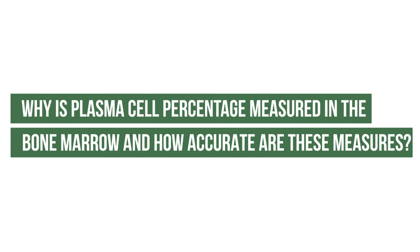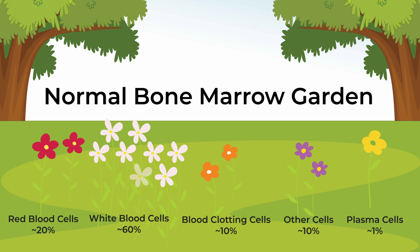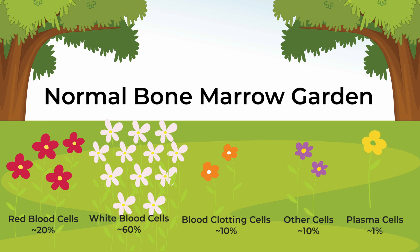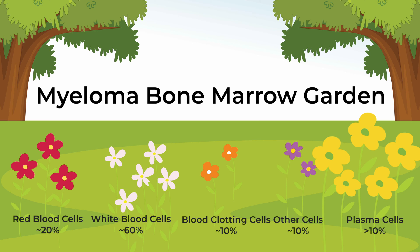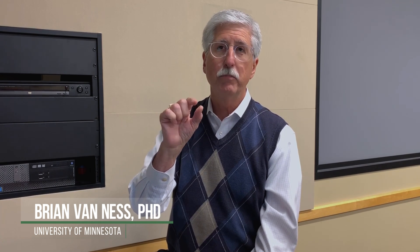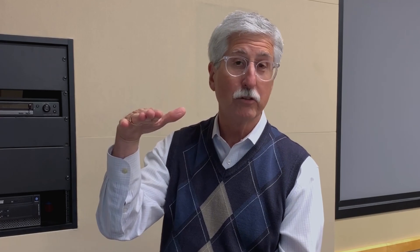One measure of disease burden is the percentage of plasma cells in the bone marrow. In a normal individual, there's typically about 1% of the marrow containing these plasma cells, but in myeloma, where you have an expansion of plasma cells, you may have 5%, 10%, or even 80% of the marrow containing tumor cells. One of the things an oncologist will look at is the percentage of plasma cells in the marrow, which will indicate whether therapy is working.